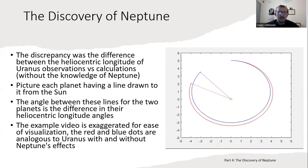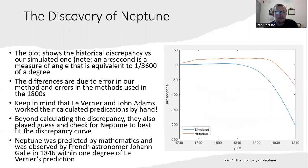The analogy here is think about the blue planet as Uranus with Neptune's effects and the red planet as Uranus without Neptune's effects. This angle between the light blue and red lines is that discrepancy we're talking about. The example video is exaggerated for ease of visualization. The plot to the right shows the historical discrepancy versus our simulated one. The y-axis is in arc seconds—that's the heliocentric longitude discrepancy. An arc second is very small, equivalent to one thirty-six hundredth of a degree. The orange data is John Couch Adams's discrepancy, and the blue line is our discrepancy from our simulated outer solar system.